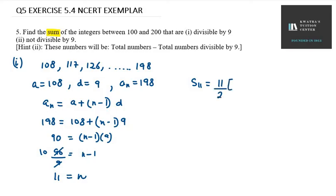So you need to now find s11. S11 can be written as 11 over 2 in bracket twice of a, twice of a is 108 plus n is 11 minus 1 in bracket d that is 9. So you can see that you get 11 over 2 in bracket 108 into 2 that is 216 plus 90.